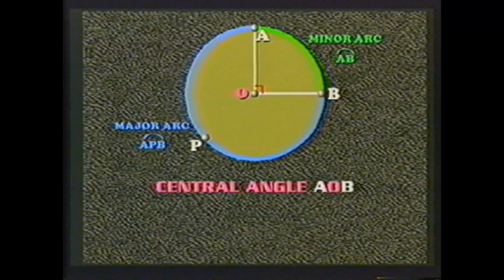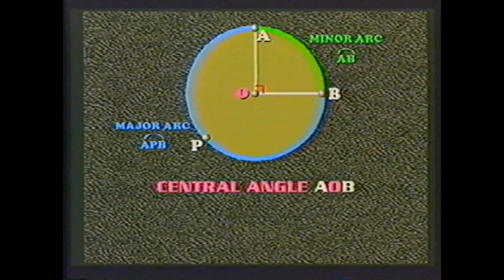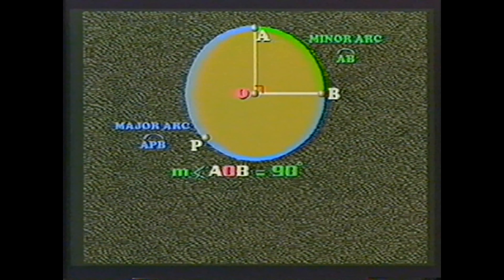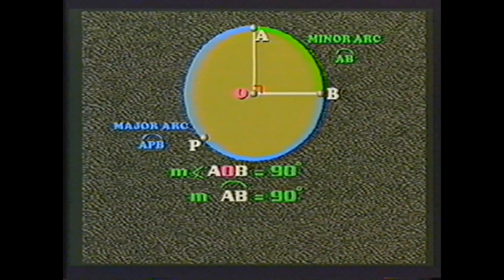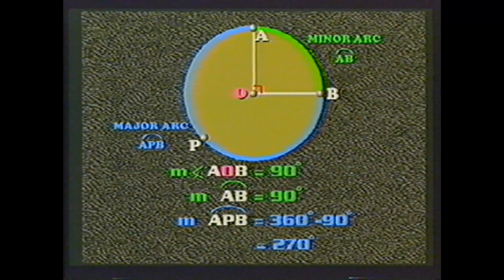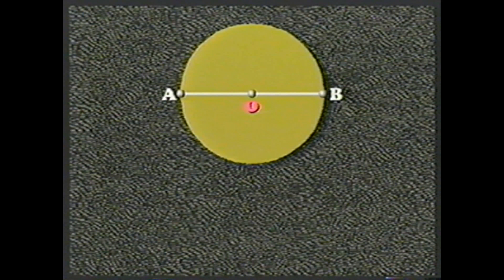We will now talk about the various angles associated with circles. A central angle is an angle whose vertex is at the center of the circle — each of its two sides is a radius. In this example, angle AOB is a central angle; its sides cut the circle at points A and B, creating a minor arc (smaller, in green) and a major arc (larger, in blue). We define the number of degrees in the minor arc AB to equal the same number of degrees as the central angle AOB.